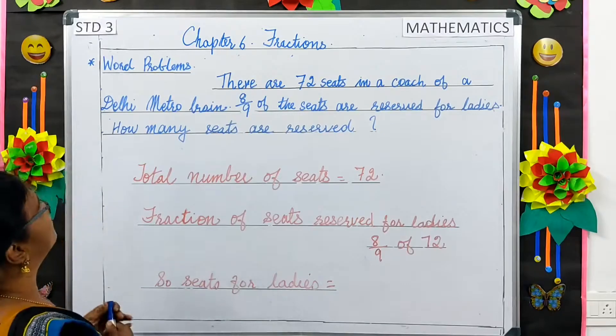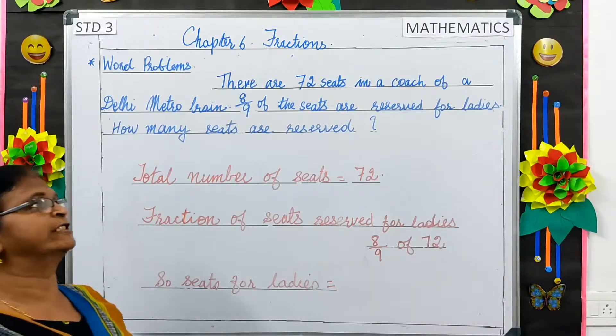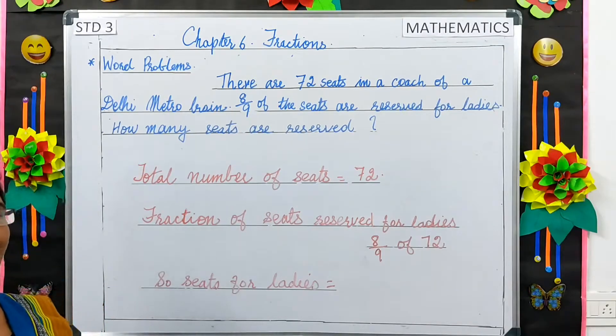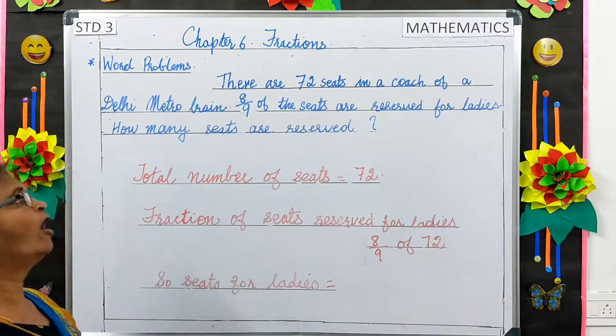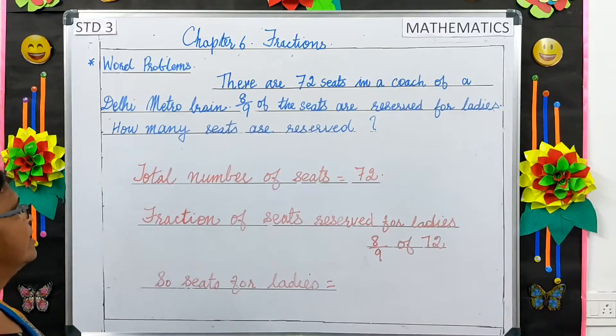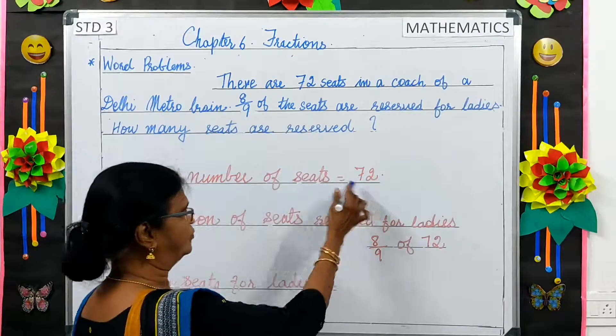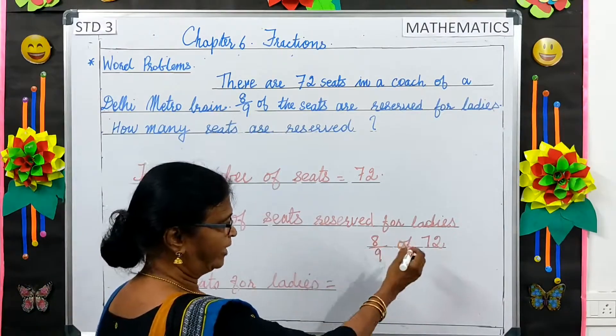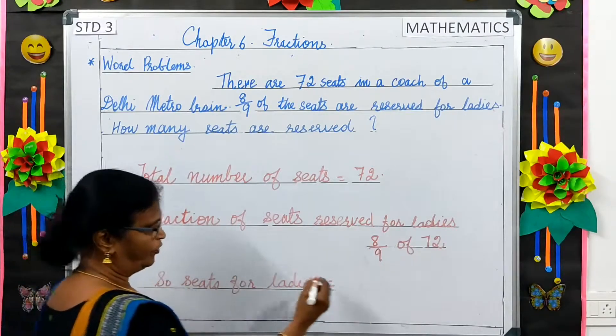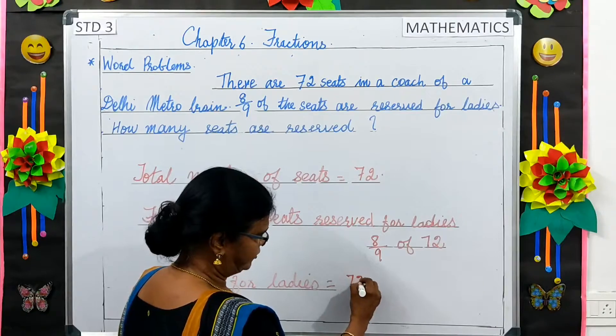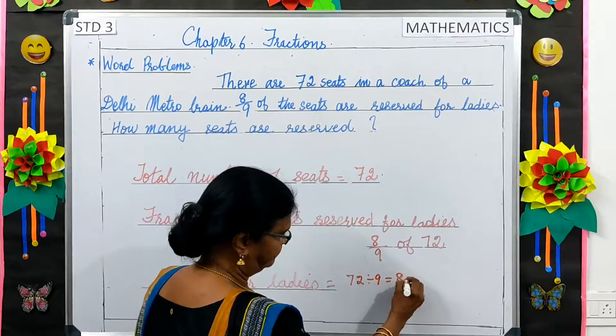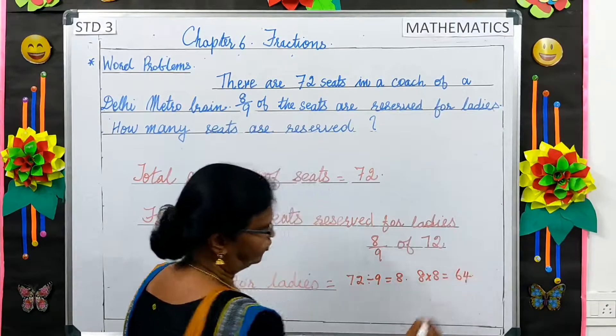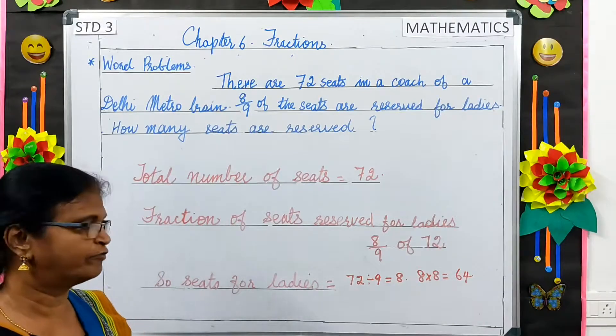Next, word problems. There are 72 seats in a coach of a Delhi metro train. 8 by 9 of them are reserved for ladies. How many seats are reserved? Total number of seats, 72. Fraction of the seats reserved for ladies, 8 by 9 of 72. So, number of seats for ladies, 72 divided by 9 is equal to 8. 8 into 8 is equal to 64. So, 64 seats are reserved for ladies.